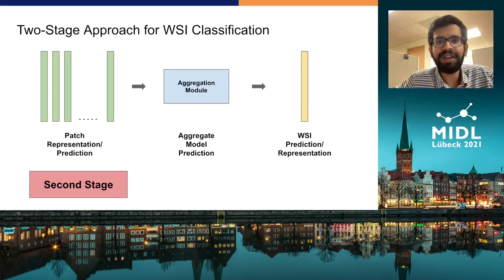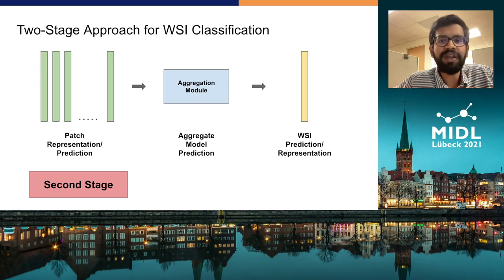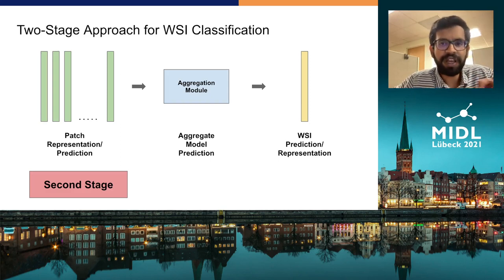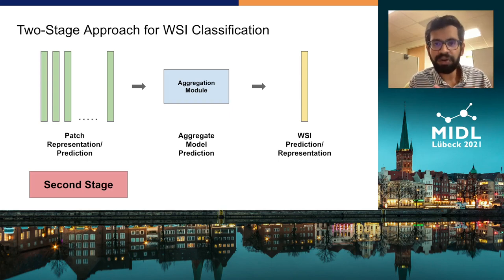Getting pixel-level annotations for training the first stage of the model is an extensive task for medical experts, so we are not sure which patches in a WSI contain disease. Given that pixel-level annotations are not available, past literature has either used a supervised framework with the weak assumption that all patches from a disease WSI contain evidence of disease — which may not be true — or an unsupervised framework like an auto-encoder, which does not guarantee that discriminative features are learned.